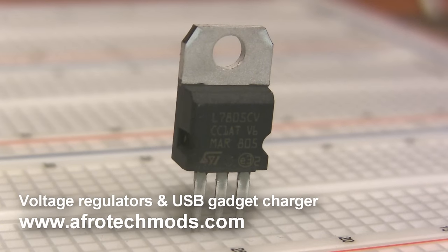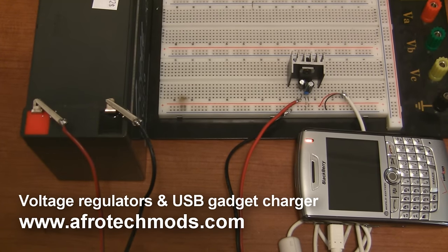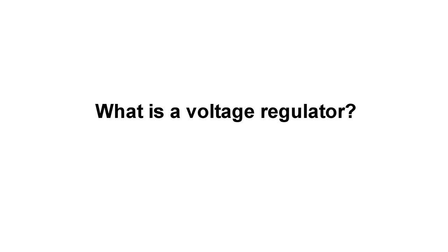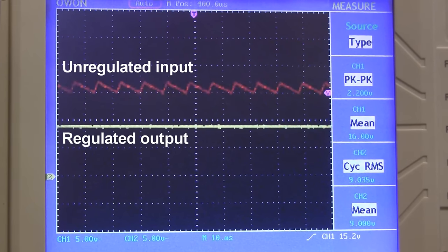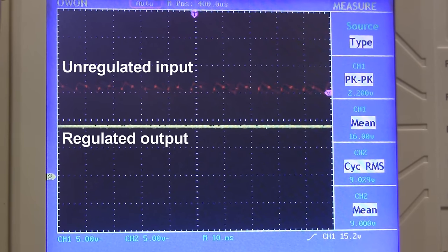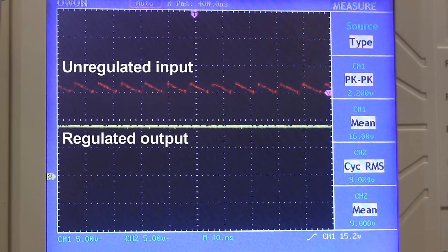In this video I'm going to talk about linear voltage regulators and show you how to use one to charge 5 volt USB devices like phones and MP3 players. So what is a voltage regulator? A voltage regulator is a device that takes an unregulated input voltage that could be fluctuating over time and spits out a perfectly regulated constant voltage.